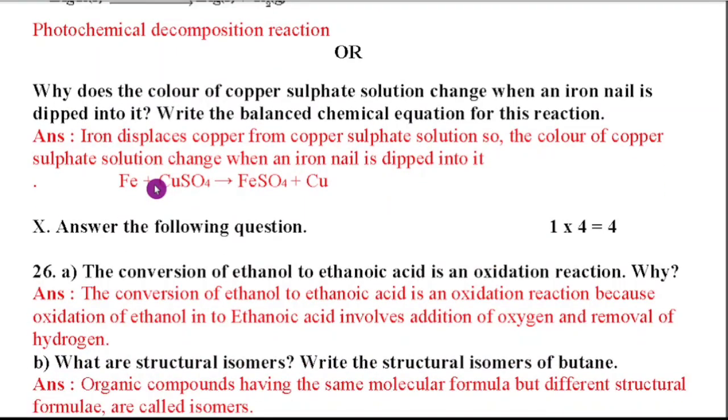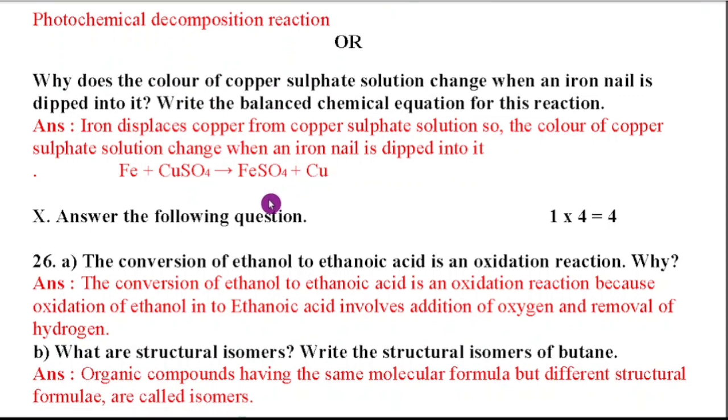So your option is there for that question. Why does the color of copper sulfate solution change when an iron nail is dipped into it? Write the balanced chemical equation for this reaction. Because iron displaces copper from copper sulfate solution. So the color of copper sulfate solution changes when an iron nail is dipped into it. So this is the balanced chemical equation. Fe plus CuSO4 gives FeSO4 plus Cu. Displacement reactions will take place.